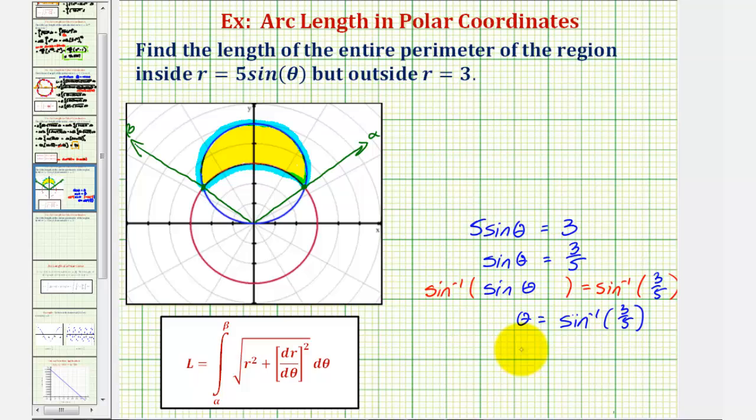Now remember, the output or range of inverse sine is from negative pi over two to pi over two radians, so the calculator is only going to give us angle alpha. We'll have to determine angle beta on our own.